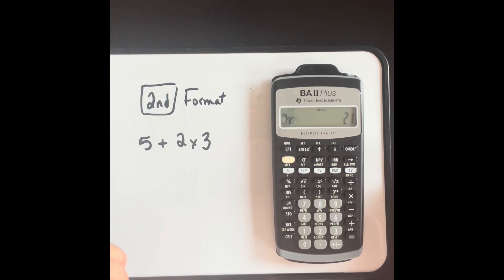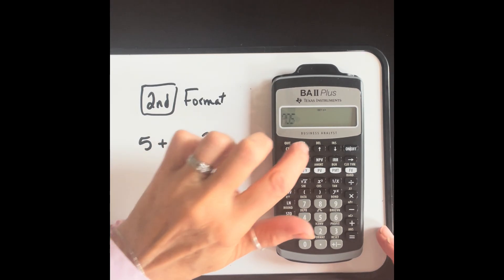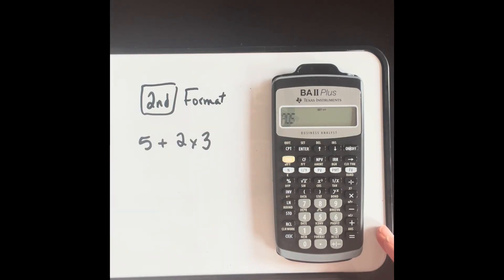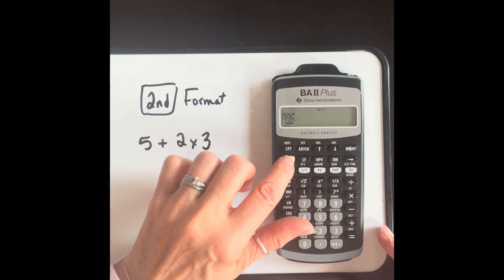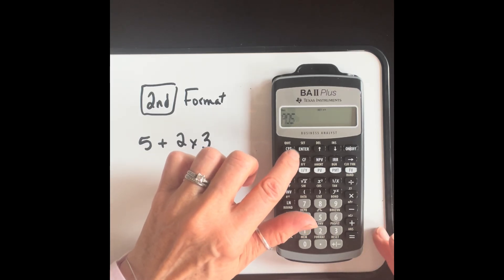So in order to change that, let's just clear that first. In order to change to the algebraic operating system, which follows the order of operations, we're going to go second and set. And now it's AOS. That's what we want, we're going to keep it at that, and we're going to quit. Those are our options for formatting, and we're done.